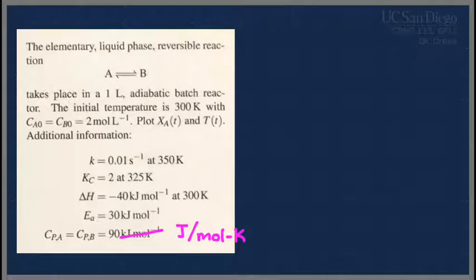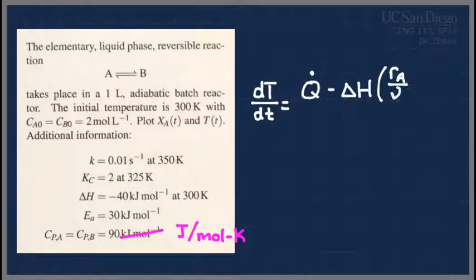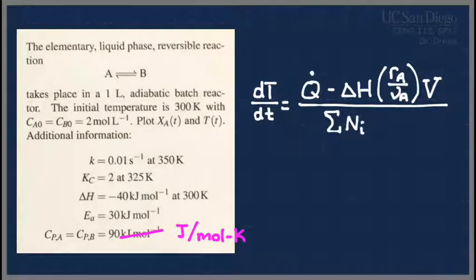And the general form of the energy balance that I had given yesterday was this one. So we had two differentials that we wanted to solve. One of them was with respect to temperature, and so dT/dt was equal to Q dot, and I'm going to use the shorter of the two here, minus delta H, so enthalpy of reaction, times rate of A divided by stoichiometric coefficient of A, which by the way that's almost always negative one, but in case a problem comes up where that is not the case, there you go, times volume.